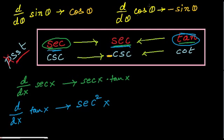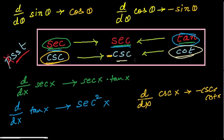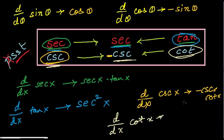Now for the derivative of cosecant, the same trick applies. Go in the direction the arrow points, which gives you negative cosecant multiplied by cot. So the derivative of cosecant is negative cosecant multiplied by cot. And for the derivative of cot, following the arrow gives you negative cosecant multiplied by cosecant, which is negative cosecant squared x.